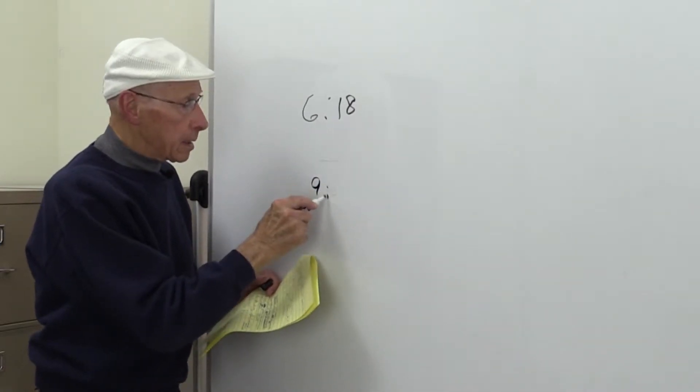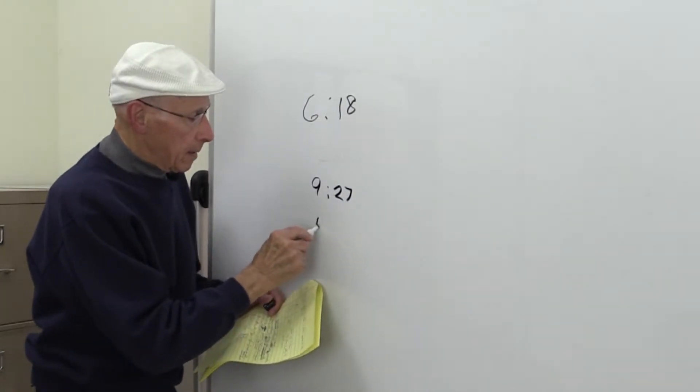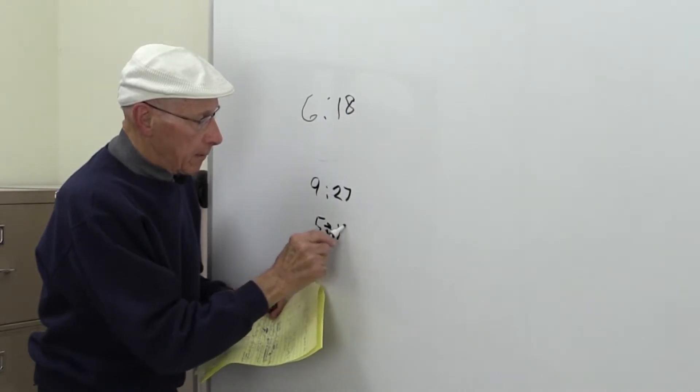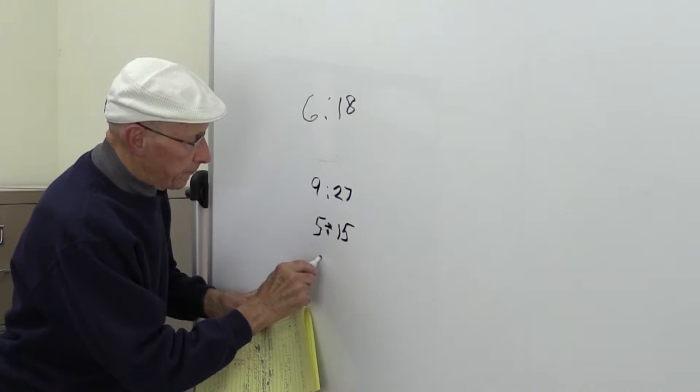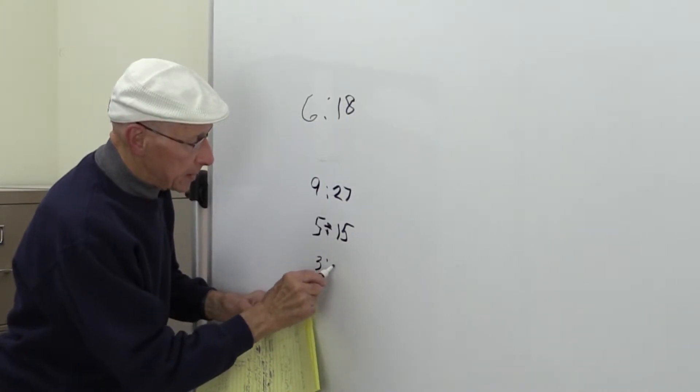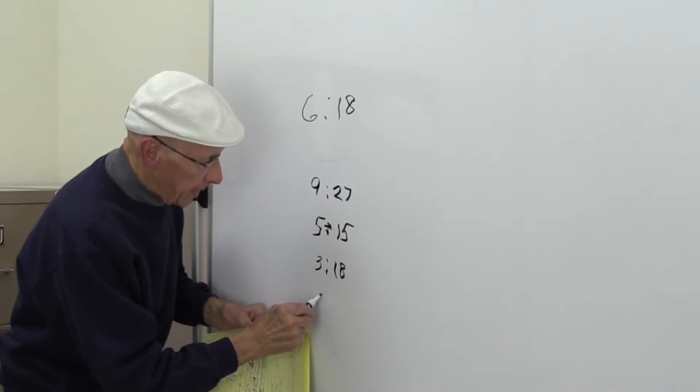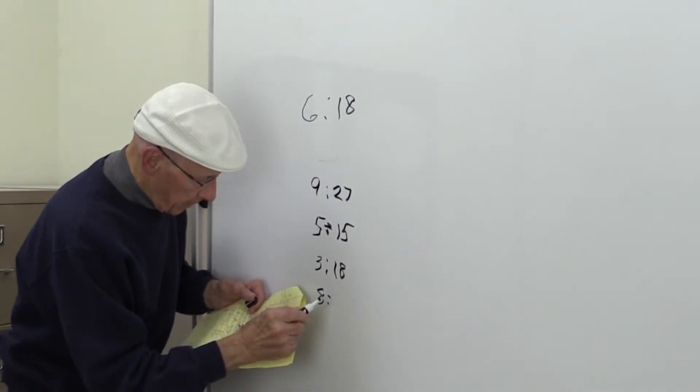So you have 9 is to 27, 5 is to 15, 3 is to 18, and 8 is to 24.